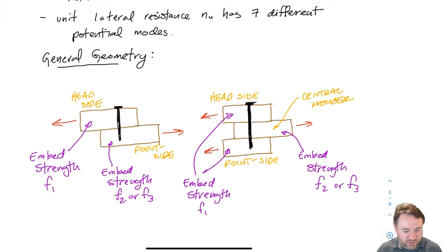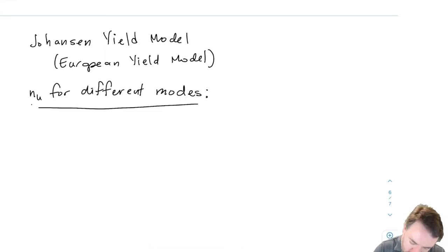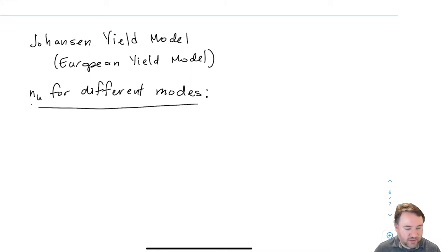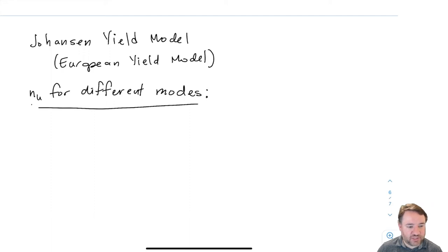All of these different equations for strength nu — that's a lateral nail strength per nail — are based on the so-called Johansen yield model, named for the person who developed it in the mid-20th century. This is also called the European yield model. Most wood standards around the world have adopted this yield model for determining the strength of nailed joints.